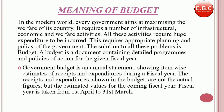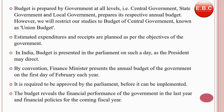The receipts and expenditure shown in the budget are not the actual figures, but the estimated values for the coming financial year. The financial year is taken from 1st April to 31st March every year. The budget is prepared by the government at all levels — central government, state government and local government — and they prepare their respective annual budgets.